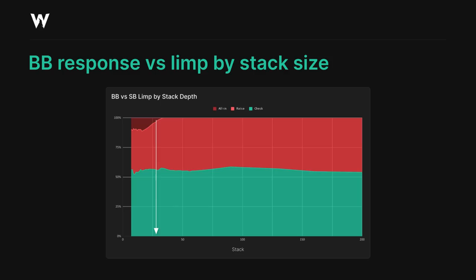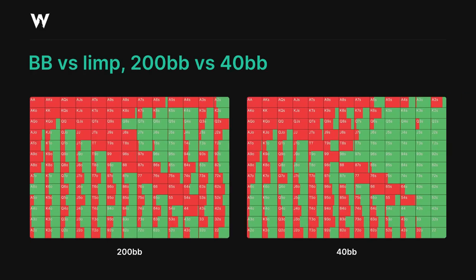The 28 big blind pivot point is approximately the point where jamming all-in becomes a viable option for the big blind versus a limp, and that's what makes it a pivot point here. It's not necessarily that the small blind's approach becomes drastically different — it's just that the stacks are shallow enough that the big blind is getting a slightly better price to jam and potentially win the roughly 3 big blinds starting pot. Let's compare the big blind's strategy at two wildly different stack sizes, 200 big blinds and 40 big blinds.